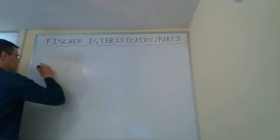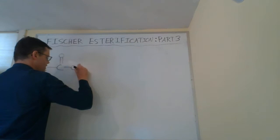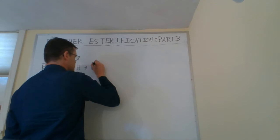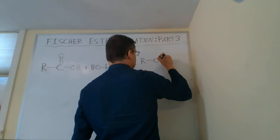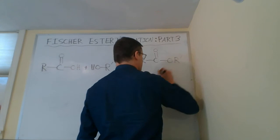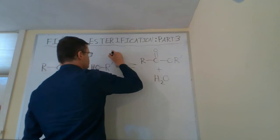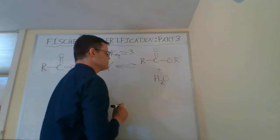In a Fischer esterification, we have a carboxylic acid, and that's going to react with an alcohol to form an ester plus water. Our problem with this reaction is that the equilibrium constant is about equal to 3, so it's close to 1.